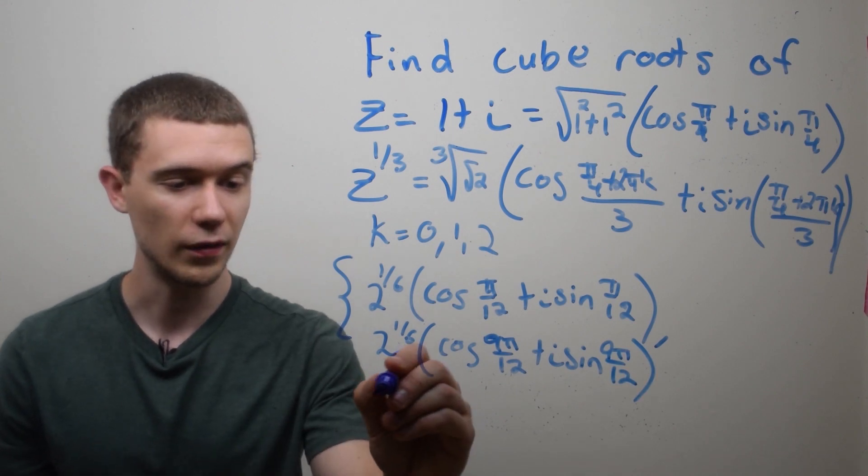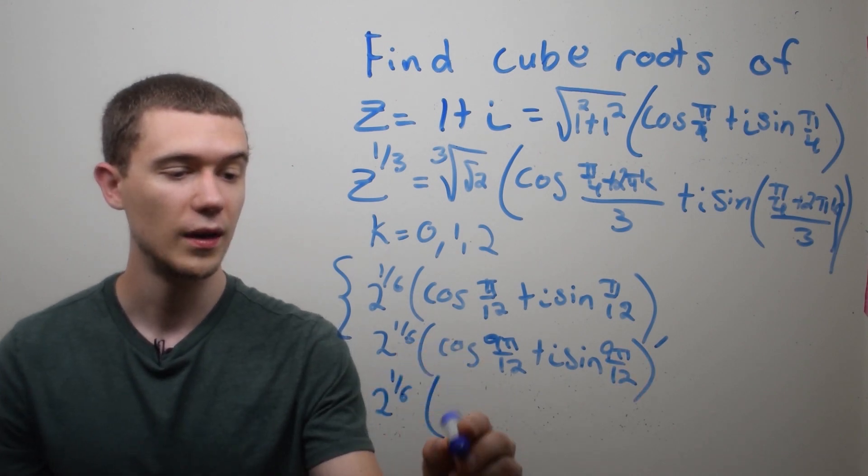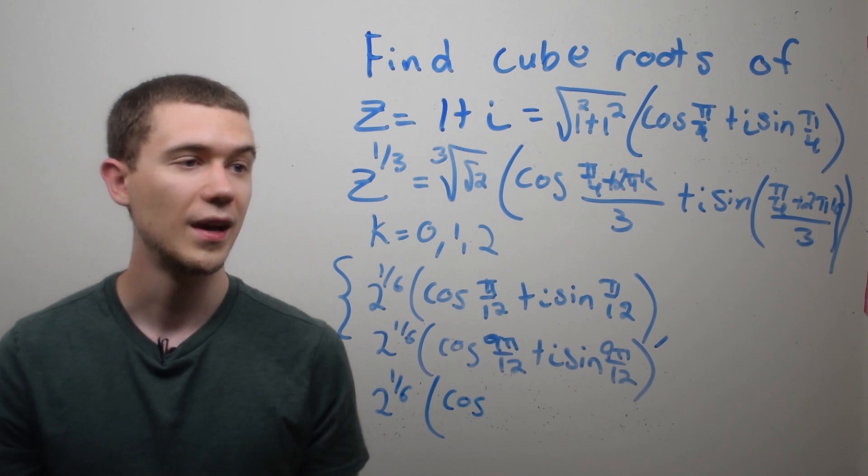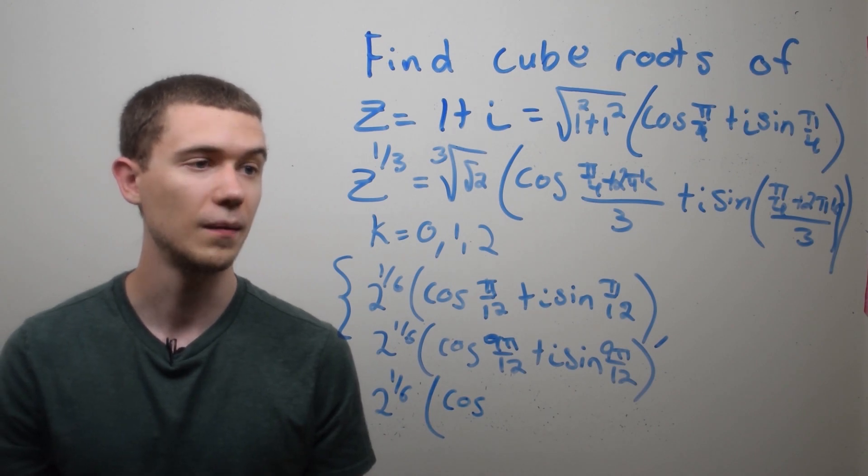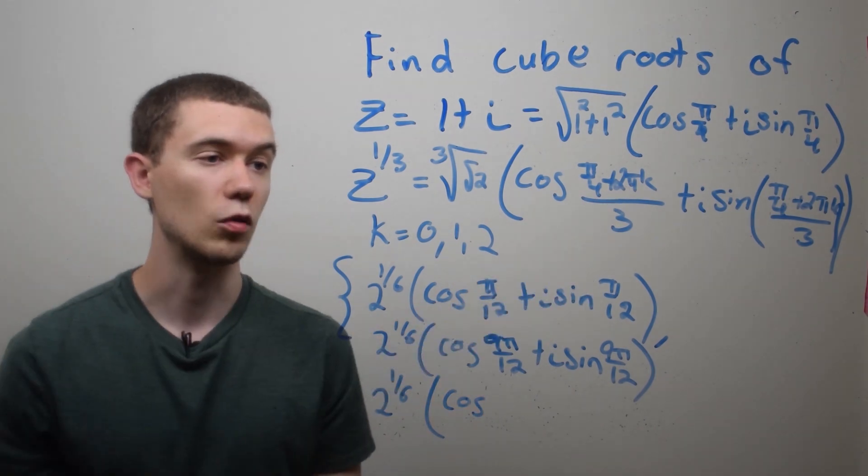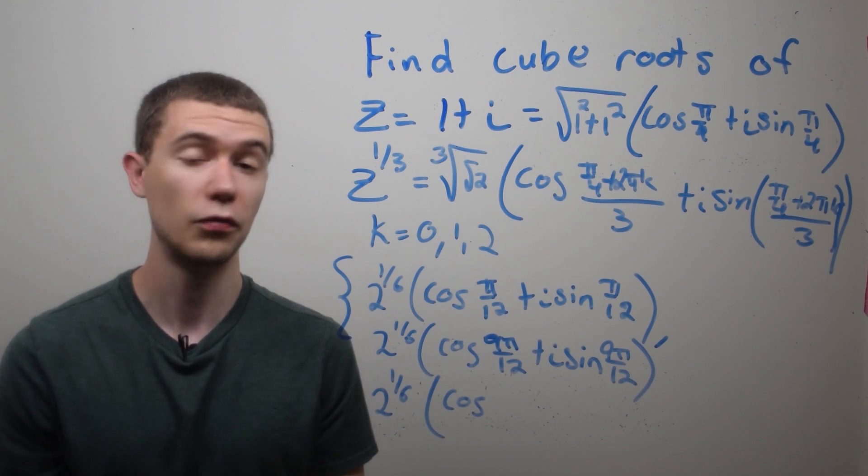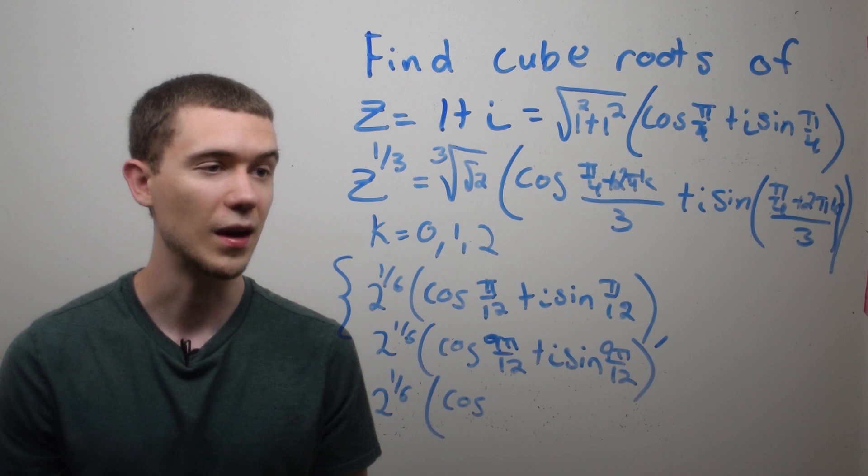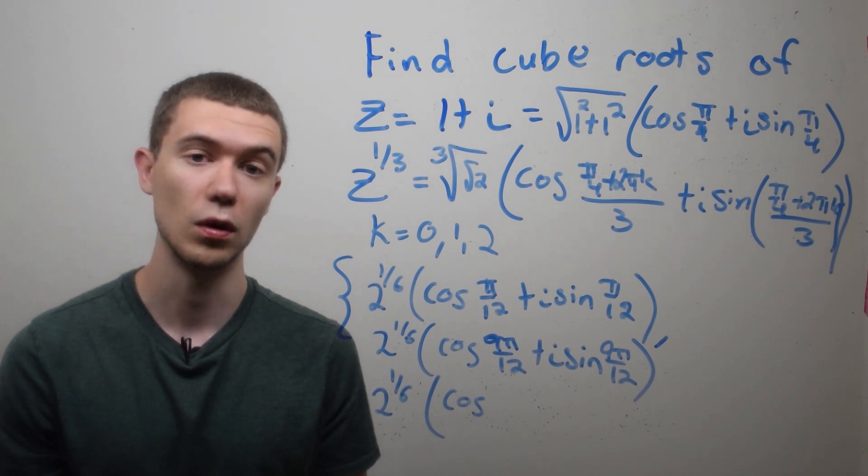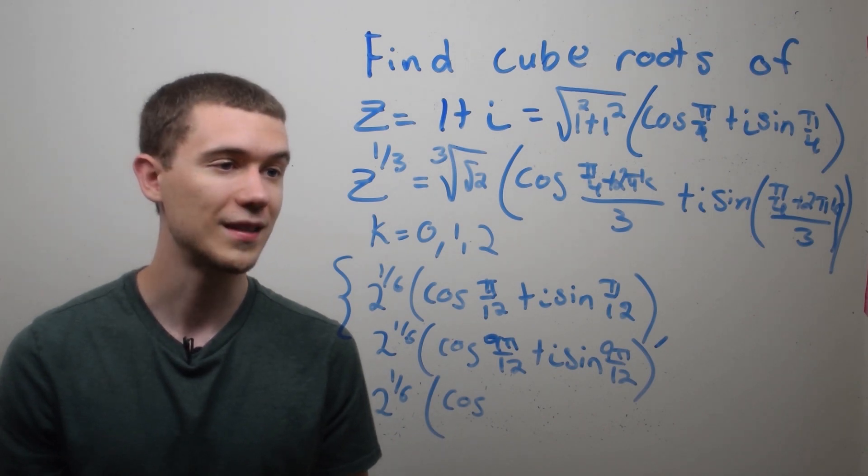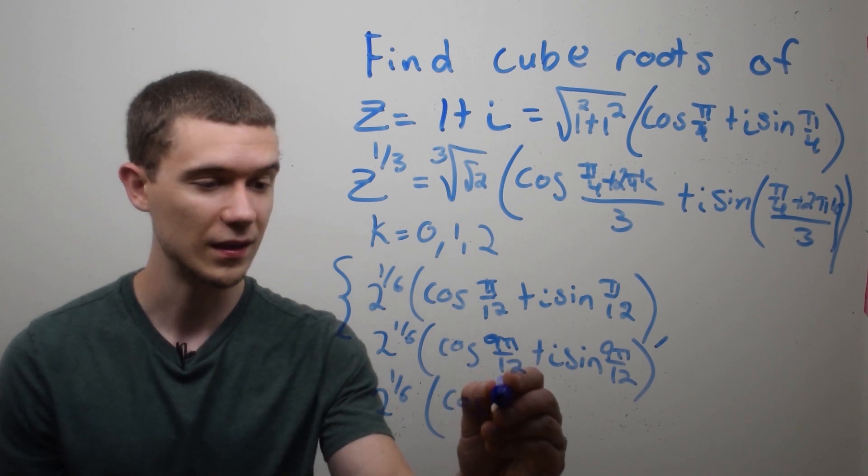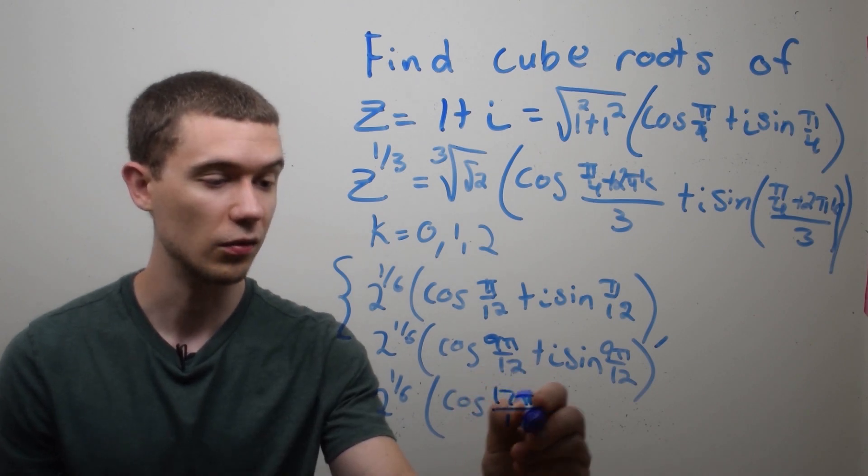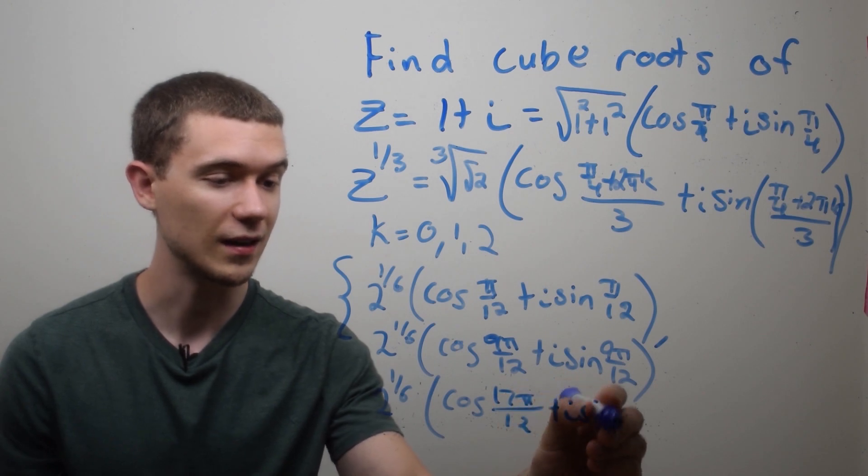And we should get one more. If I plug in k equaling 2, that'll be cosine of, and now I need to plug in 2 for k right here. That would be pi over 4 plus 4 pi over 3. 4 pi is the same as 16 pi over 4. 1 plus 16 is 17 pi over 4 divided by 3 is 17 pi over 12. And sine will get the exact same thing.